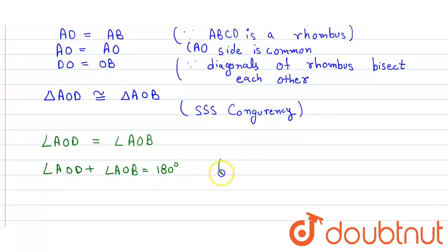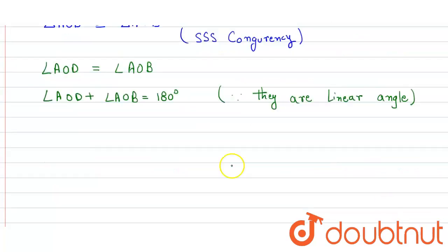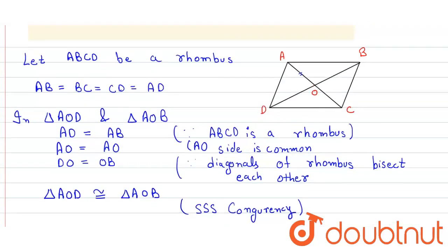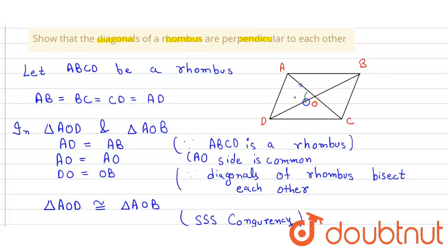Because they are a linear pair, angle AOD + angle AOB = 180°. Since angle AOD = angle AOB, we can write 2 × angle AOD = 180°, which gives us angle AOD = 90°. So this angle is equal to 90°.